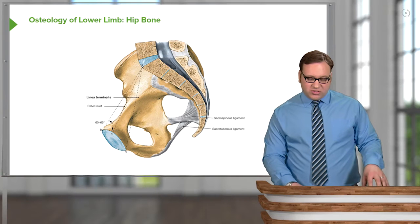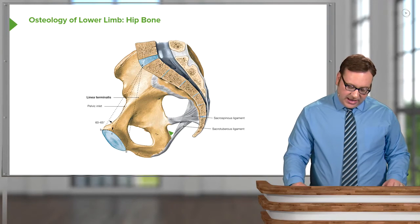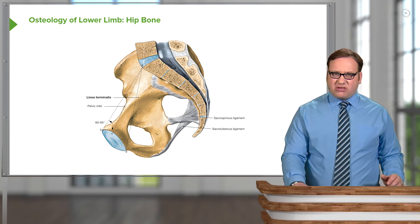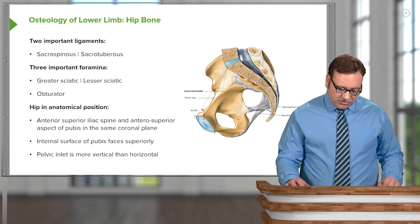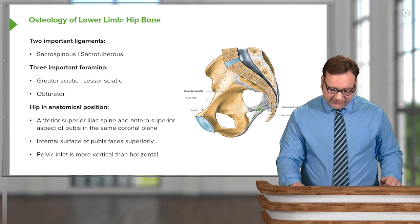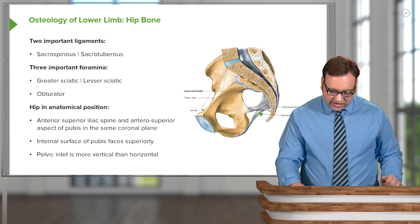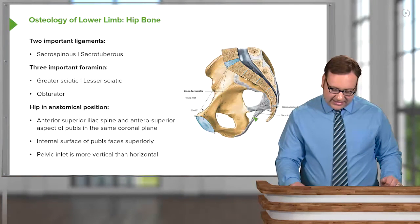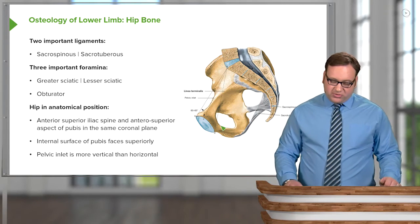Looking at the hip bone itself, we have the greater and lesser sciatic foramina. These are converted from greater and lesser sciatic notches via two ligaments: the sacrospinous and the sacrotuberous. The sacrospinous forms the greater sciatic foramen, while the sacrotuberous and sacrospinous together form the lesser sciatic foramen. We also have the obturator foramen.